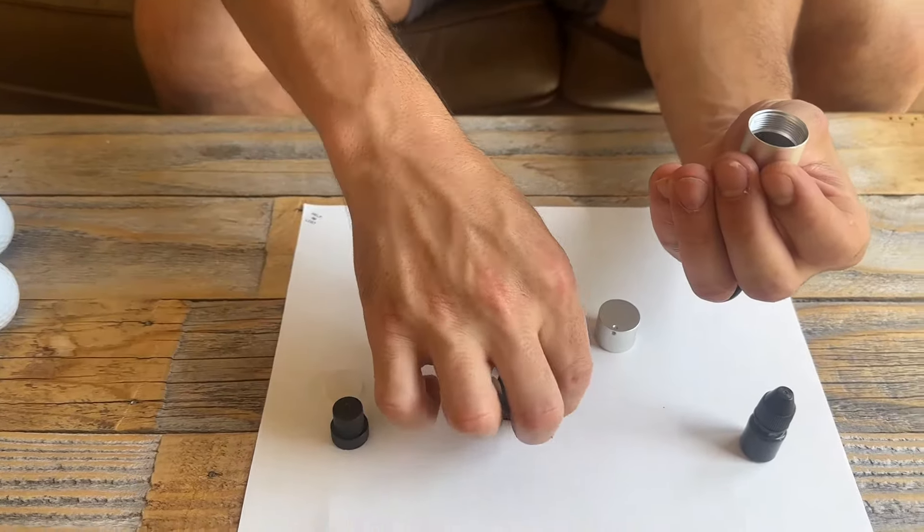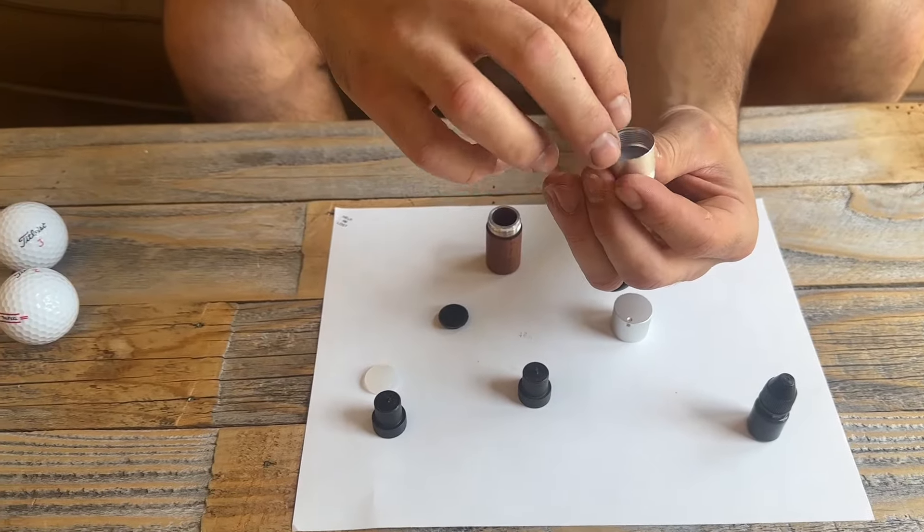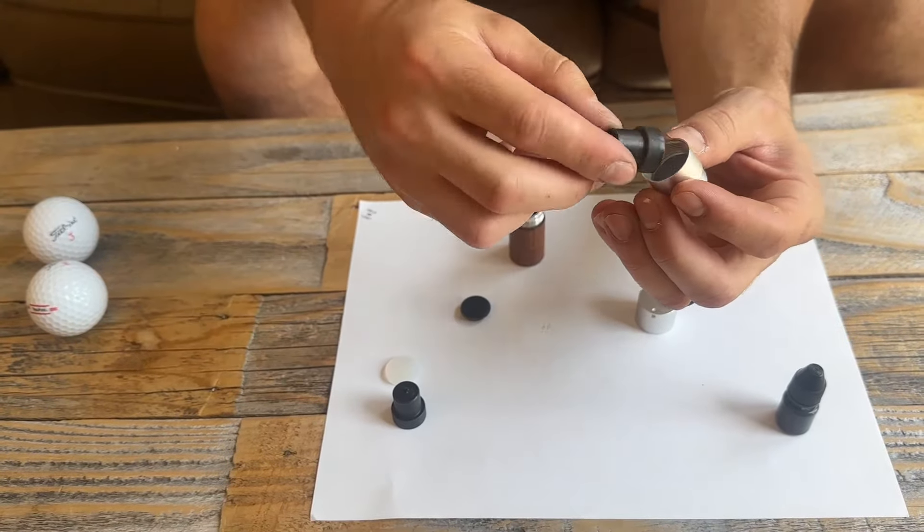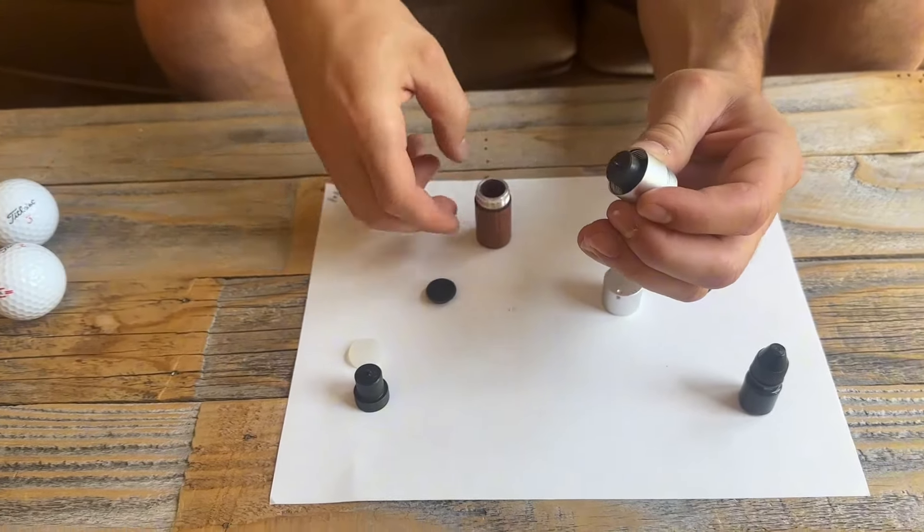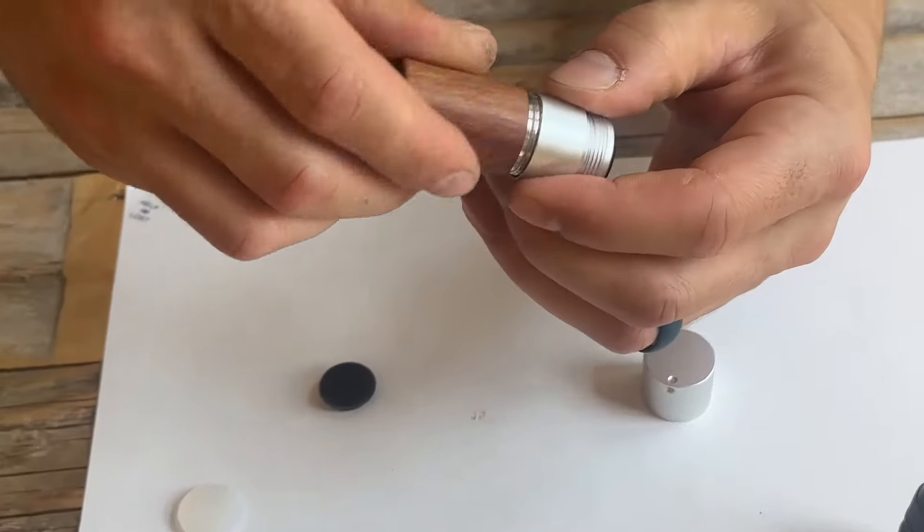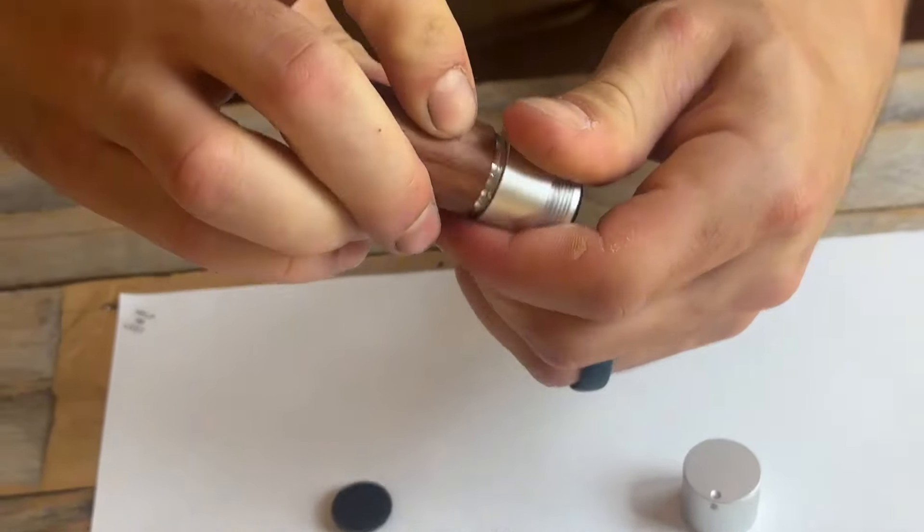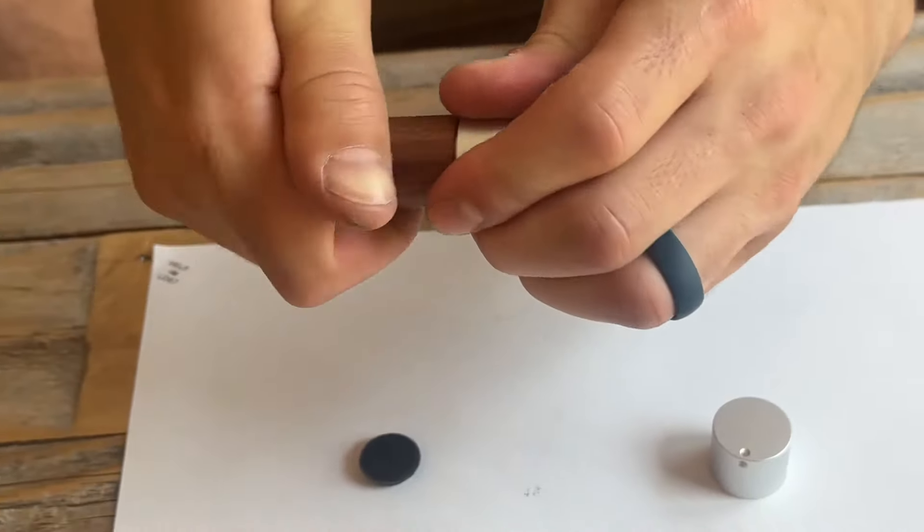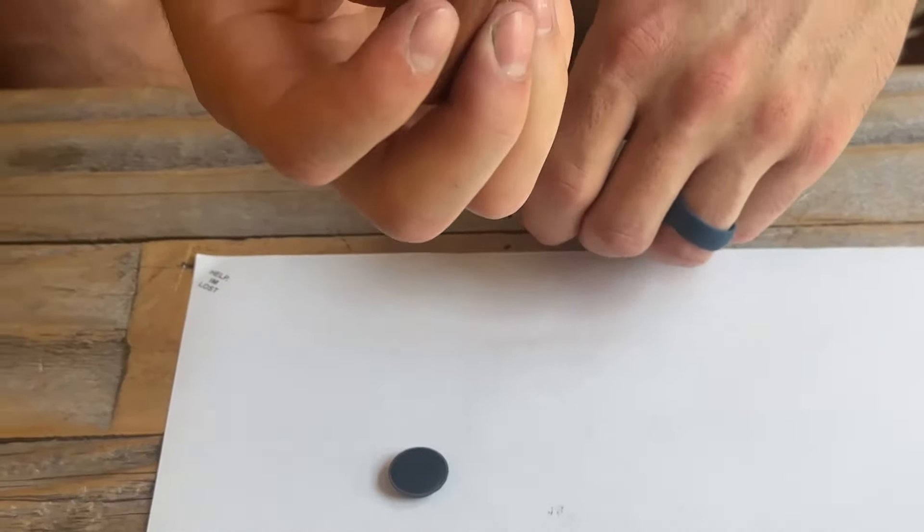We're gonna put the clear rubber piece back in. We're gonna push it in with that black piece. Screw this back on and you're ready to go.